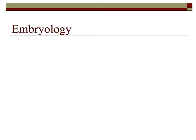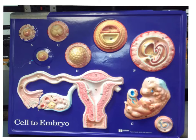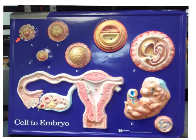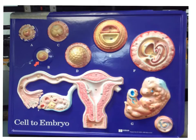In this video we will review the embryo model and the associated structures found on a typical human embryo. On this model we can see the various stages of development. Beginning at the top left we can see a mature ovum, found in the female. Here we have the ovum again, and we have fertilization of the ovum by the sperm. Once we have a fertilized egg it is now called a zygote.